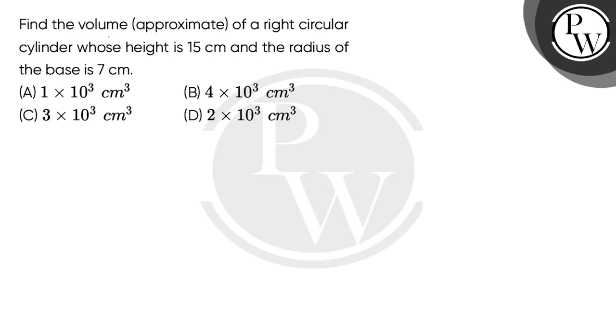Let's read the question. Find the volume approximate of a right circular cylinder whose height is 15 cm and the radius of the base is 7 cm.